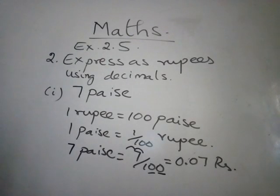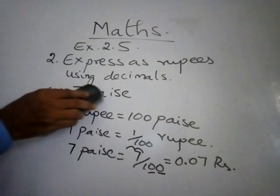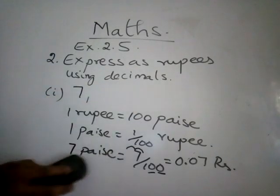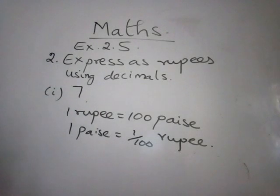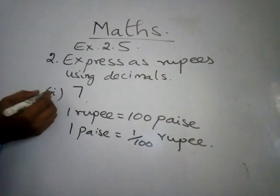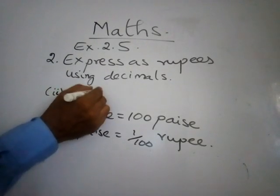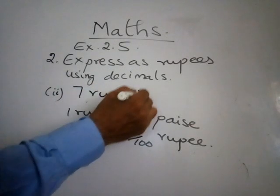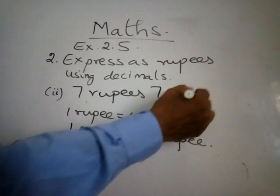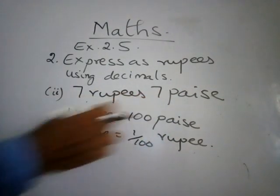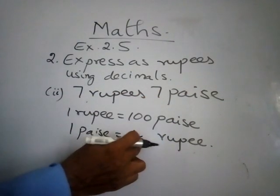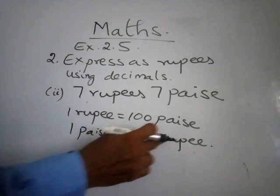Second question: 7 rupees, 7 paise. Let us do this question in 2 steps. 1 rupee equals 100 paise, 1 paise equals 1 by 100 rupees.